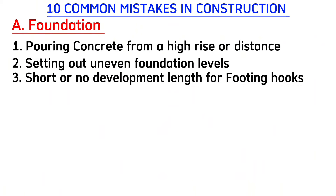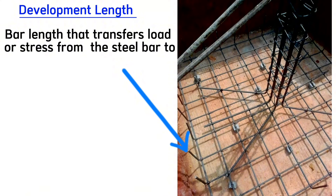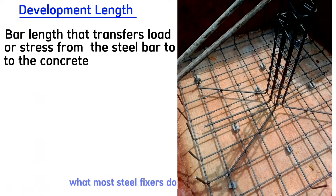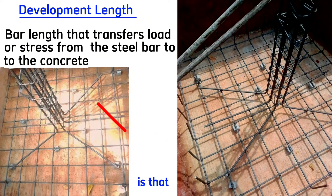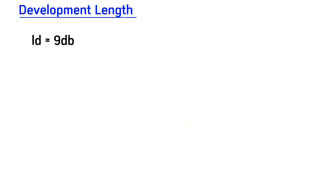Common mistake number three is a short or no development length for the footing hooks. Development length means the bar length that transfers load or stress from the steel bar to the concrete. What most steel fixers do is simply cut these steel bars and place them in the footing without the correct length.